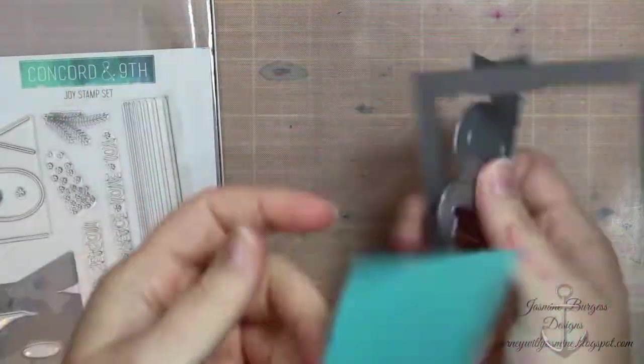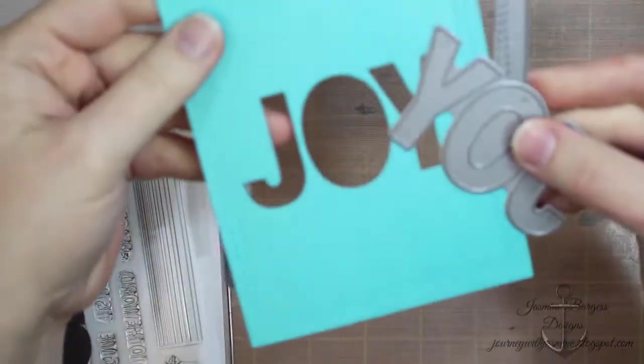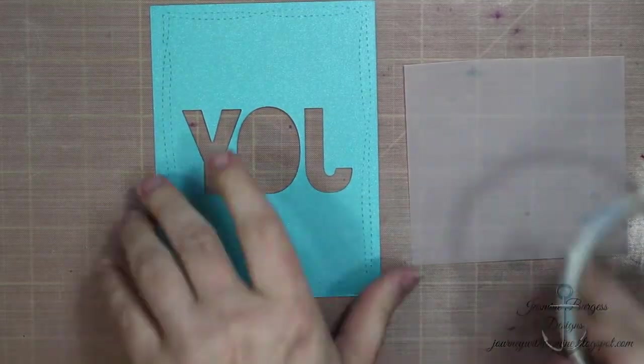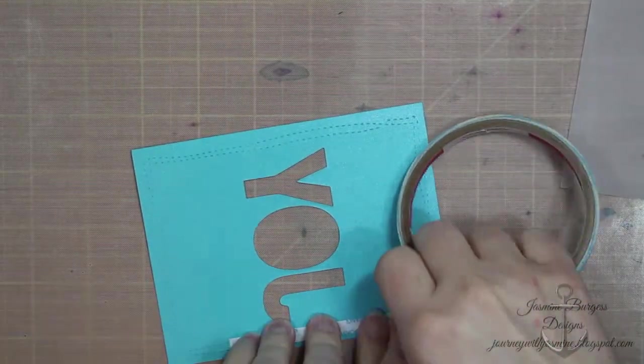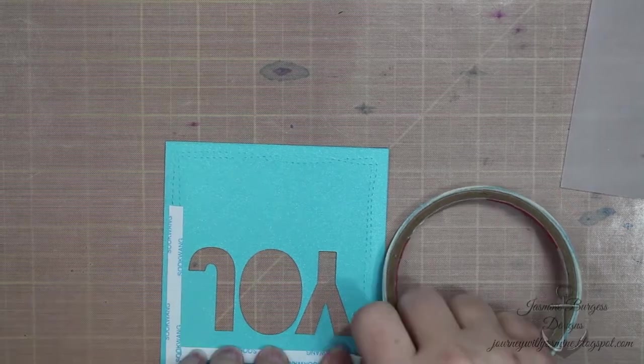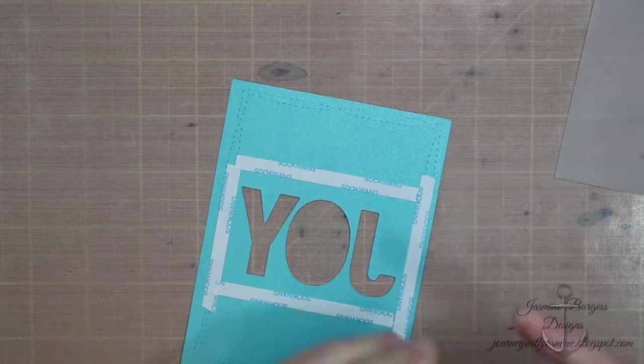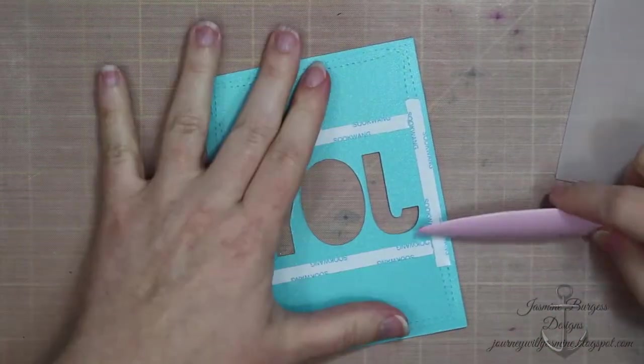So I'm using this Concord 9th Joy stamp set and die set. And I've got some teal shimmer cardstock and I've cut that out using a Wonky Stitches die by Avery Elle and I'm going to put some vellum behind our die cut Joy. Just using some score tape on the back.